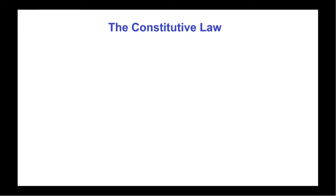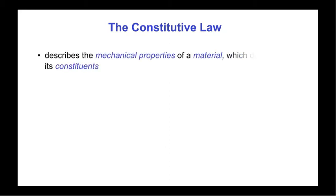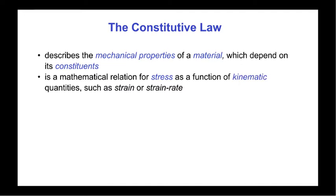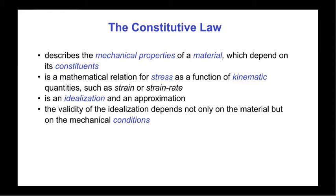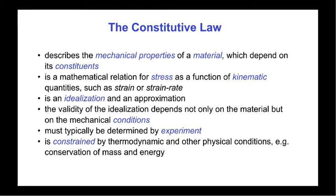The conservation laws of continuum mechanics are universal and independent of the material as long as the continuum assumption is appropriate. The constitutive law describes the property of the particular material of interest — specifically the mechanical properties, which depend on its constituents. It is a mathematical relationship for stress as a function of kinematic quantities such as strain, or in the case of fluids, strain rate. The constitutive law is an idealization and an approximation; its validity depends not only on the material but also on the mechanical conditions to which the material is subjected. Typically, the constitutive law must be determined by experiment, but is constrained by thermodynamic and other physical conditions such as conservation of mass and energy. It should also be derived by taking into consideration the microstructure of the material.